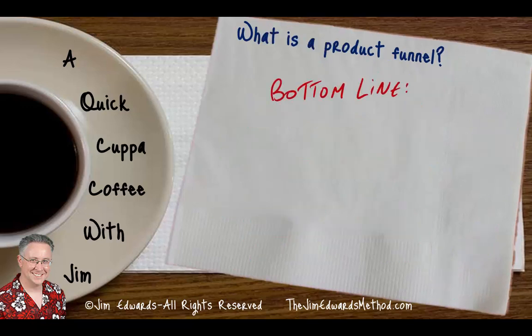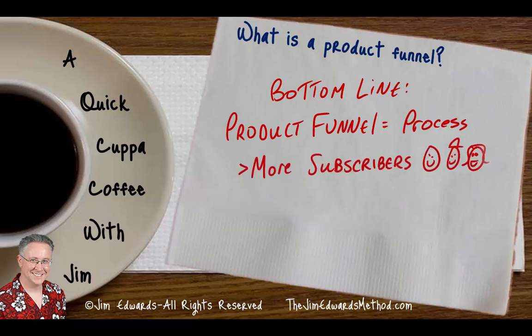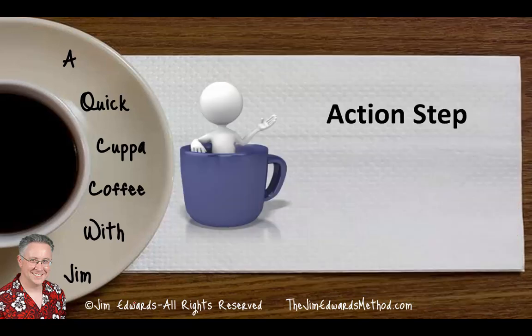So in the end, the bottom line — if we're just tying up what is a product funnel — a product funnel is a process. It's a buying process. You're helping people to get more of what they want, and in the process you get more subscribers, you make more money, and both of you have more satisfaction because they're getting more of what they want and you're able to stay in business and grow. Your action step is to really define your funnel — sit down with a napkin and a piece of paper and define your funnel, both on the front-end and the back-end.